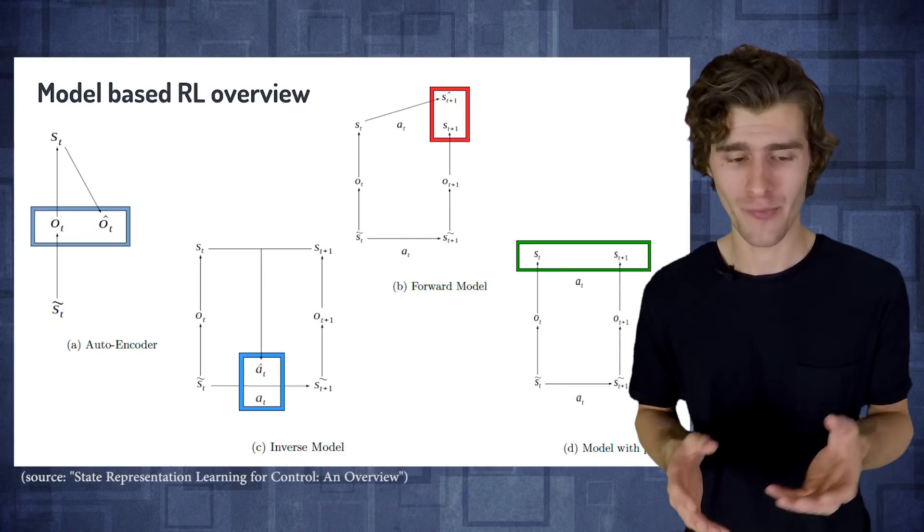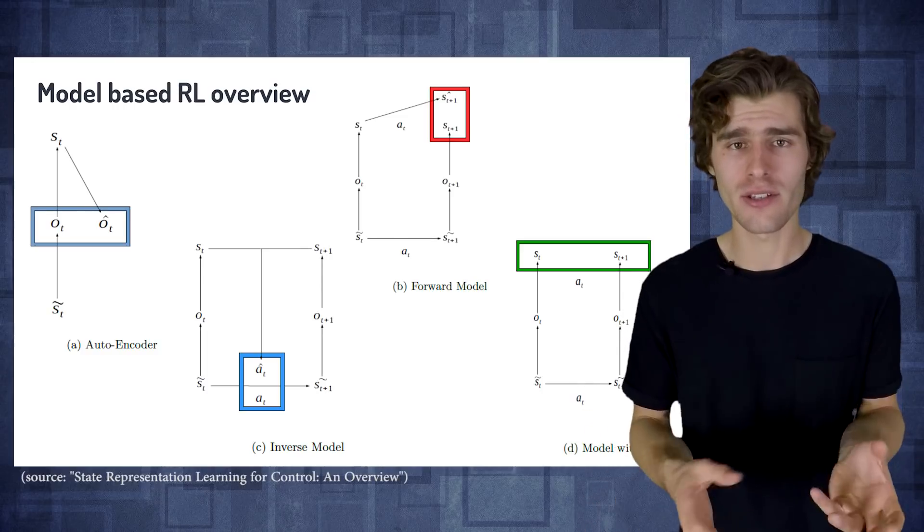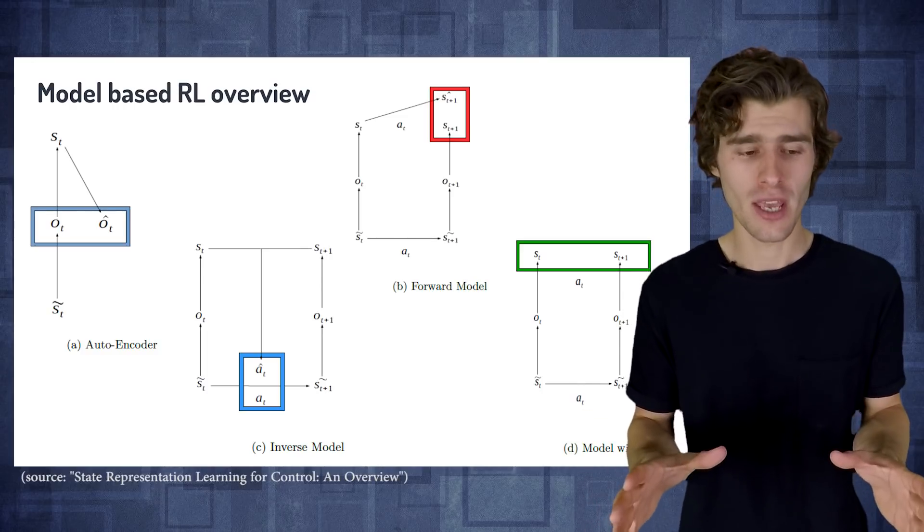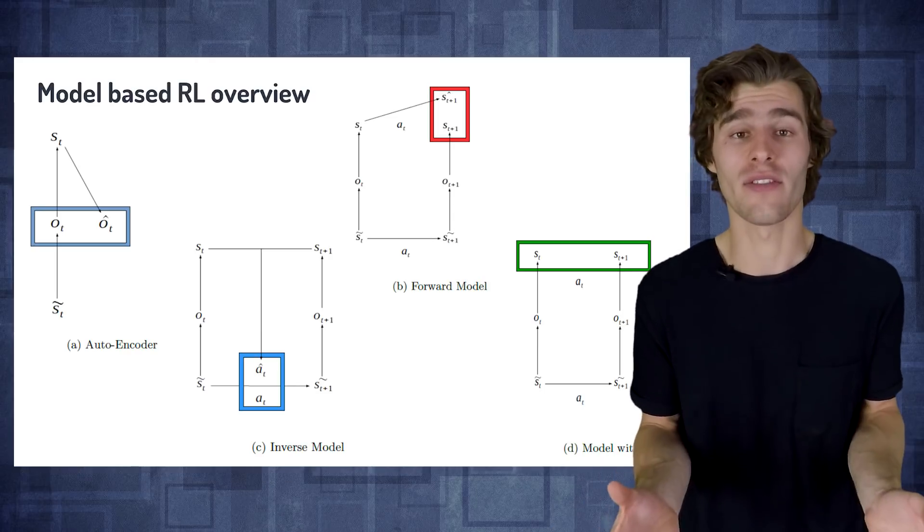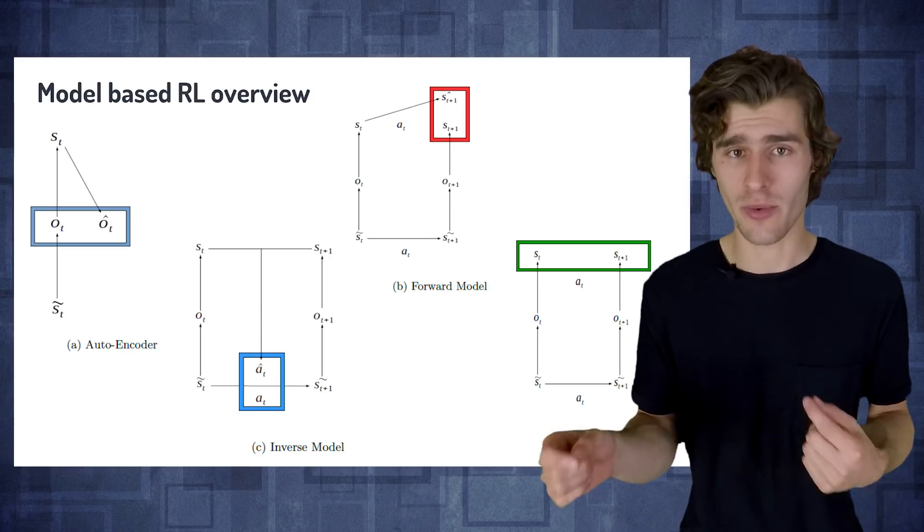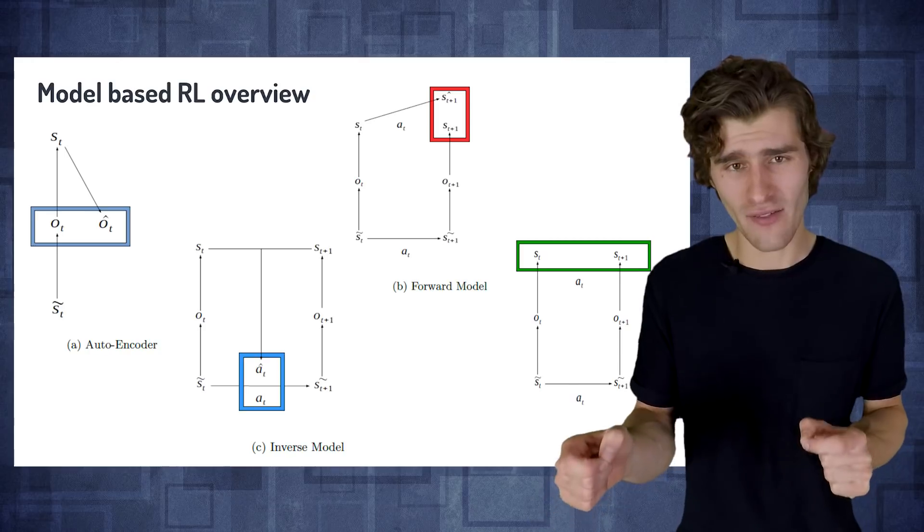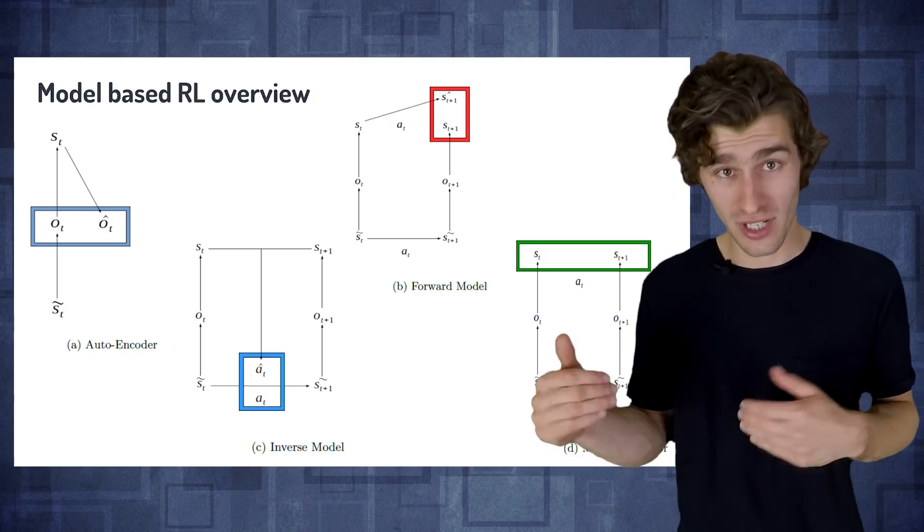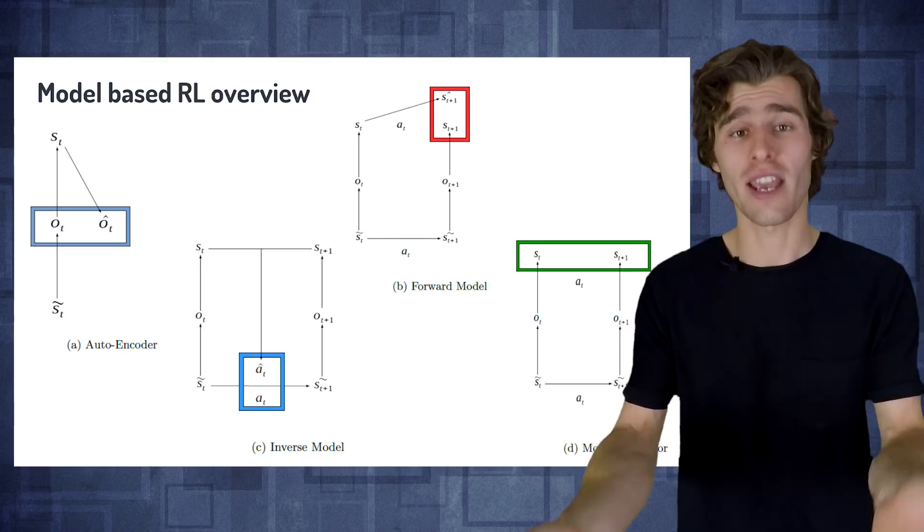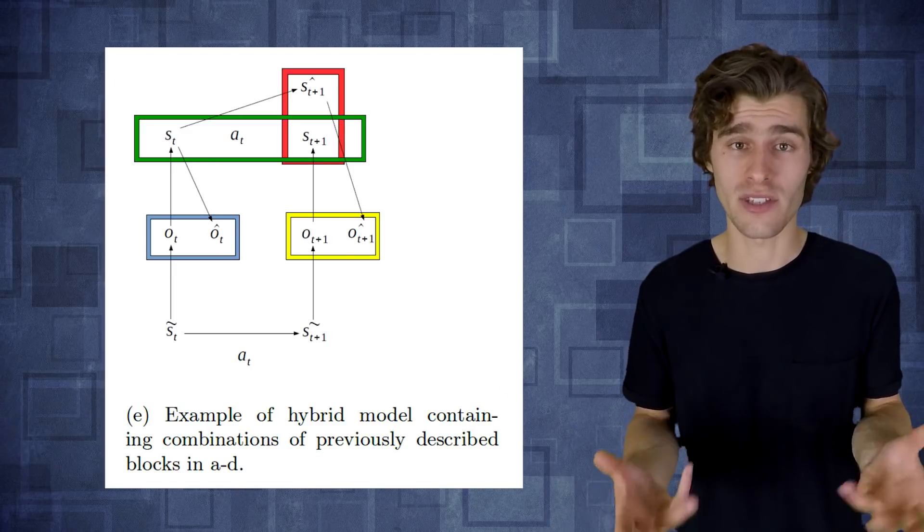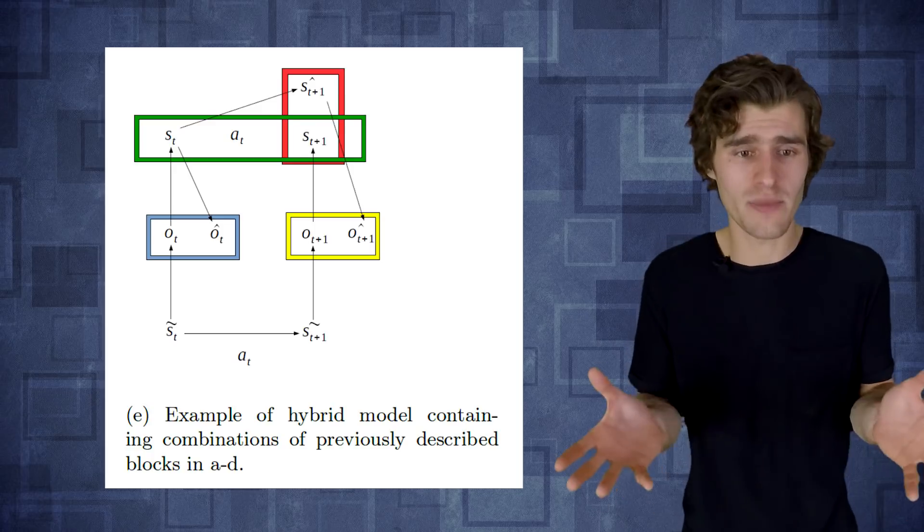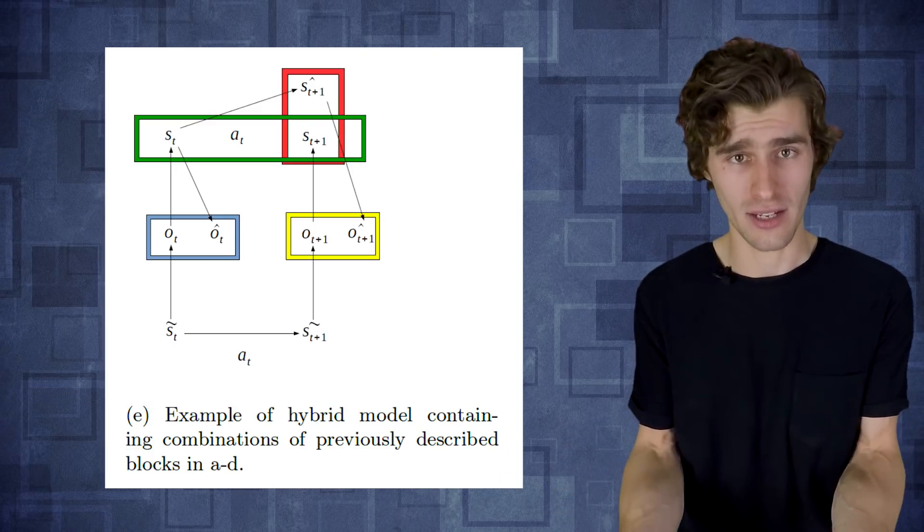And so a standard way to do this in reinforcement learning is what we call a forward model. So this means that your agent is going to see a specific input frame. It's going to use some kind of a feature extractor to encode that input data into some kind of a latent representation. And then you have a forward model that tries to predict that same latent representation for the next frame in the environment. So basically it's going to try and learn the dynamics of its environment based on what I'm seeing now, what is going to happen next, right?